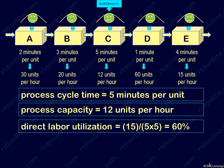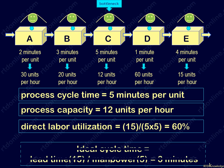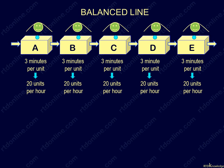What if we can distribute equally the 15-minute lead time among the 5 operators? Our ideal cycle time would be 3 minutes per station per operator. Our balanced line or process would look something like this.